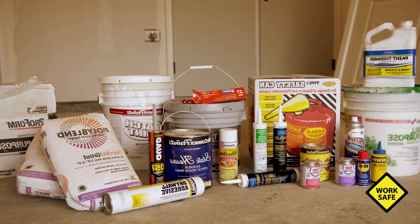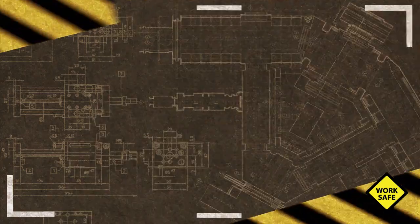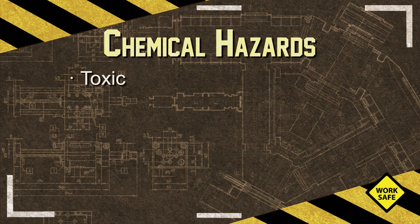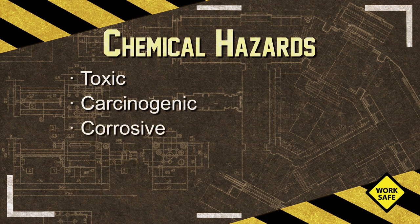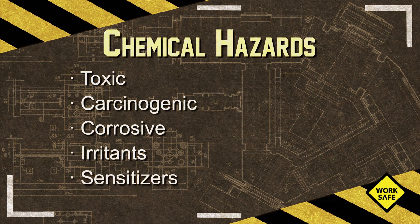There are several different types of chemical hazards. There are toxic chemicals that can have a poisonous effect on a person. There are carcinogenic chemicals, believed to cause cancer after exposure. There are corrosive chemicals, causing visible destruction or alterations. There are irritants, chemicals causing an inflammatory effect, and sensitizers, chemicals causing an allergic reaction in tissues.